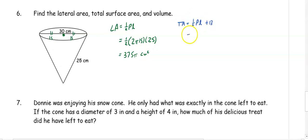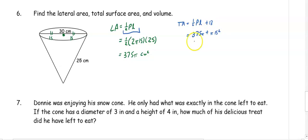We get 375 pi centimeters squared for the lateral area. Your total surface area is one half perimeter times slant height plus the area of the base. We already have the first part, so we have 375 pi plus the area of the base, which is pi times 15 squared, giving us 375 pi plus 225 pi.